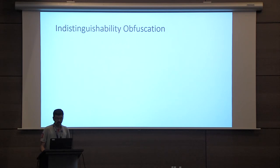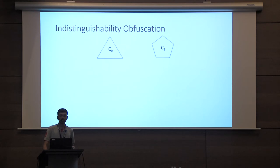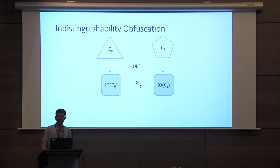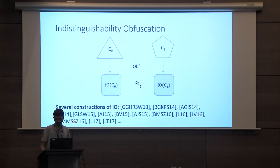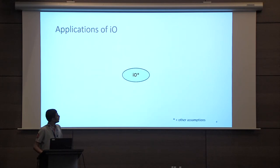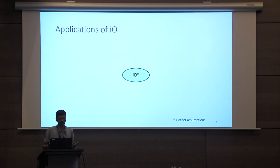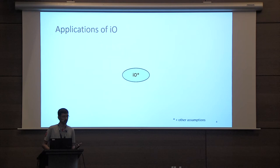Indistinguishability obfuscation, or IO, guarantees that for any two circuits C0 and C1 that compute the same functionality, the obfuscation of C0 is computationally indistinguishable from the obfuscation of C1. Starting from the first candidate construction given by Garg et al. in 2013, we now have several candidates of IO from assumptions on multilinear maps. The security guarantee provided by IO seems extremely weak, but somewhat surprisingly IO plus other standard assumptions such as one-way functions has been used to construct several cryptographic primitives.